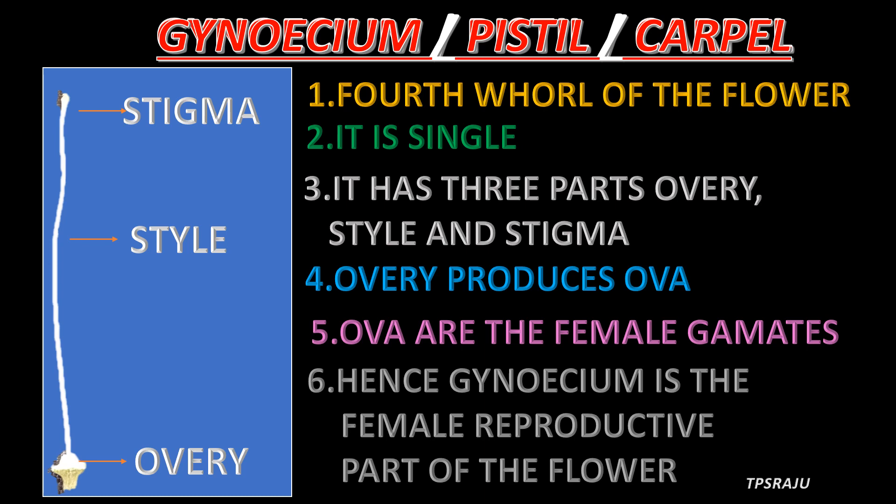This is the gynoecium, also called the pistil or carpel. It is the fourth whorl of the flower and is single. It has three parts: the ovary, style, and stigma. The ovary produces ova, which are the female gametes. Hence the gynoecium is the female reproductive part of the flower.